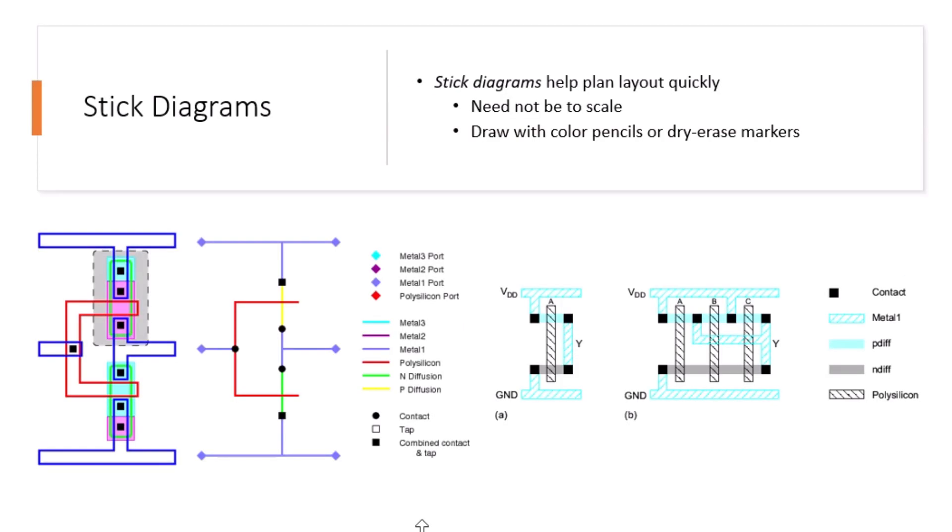Now that we understand the layout, let's talk about stick diagrams. Stick diagrams are a simplified way to plan the layout without worrying about exact dimensions. They help you visualize the connectivity between components before you dive into the detailed layout. In a stick diagram, different colors are used to represent different layers, or you can also use different designs as you can see here.